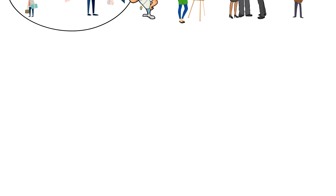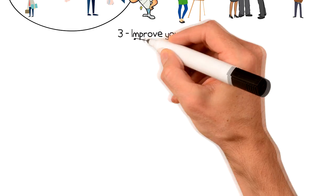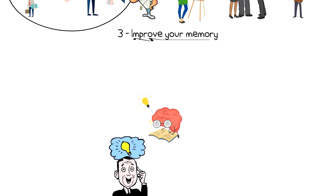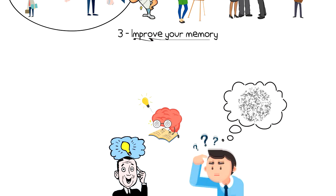Number three, improve your memory. One of the ways to make less mistakes is to improve your memory. And it's always much easier to remember meaningful information rather than random data. If you are given random numbers or letters, then it's likely that you'll quickly forget them. But if you can relate these numbers to something meaningful, then you're more likely to remember them.